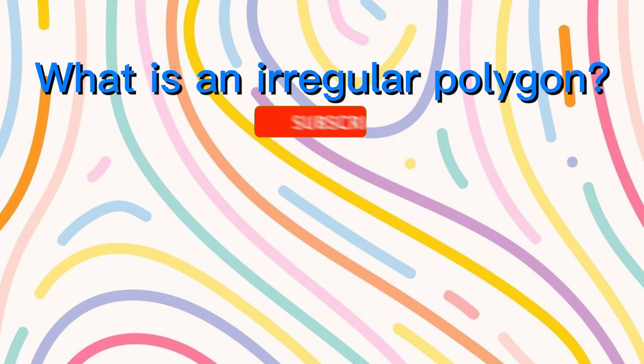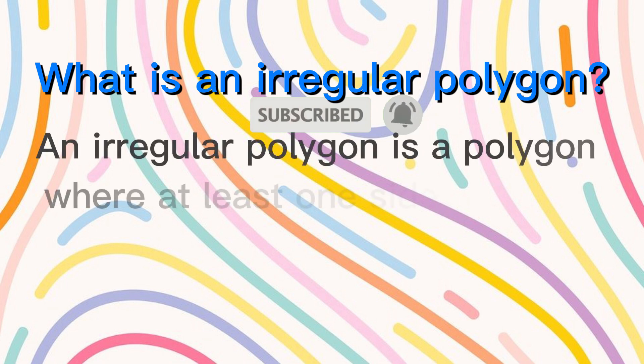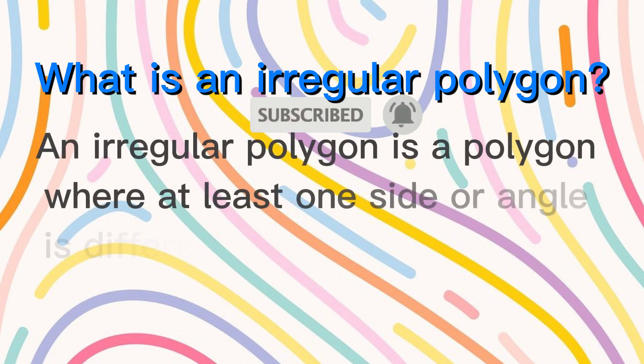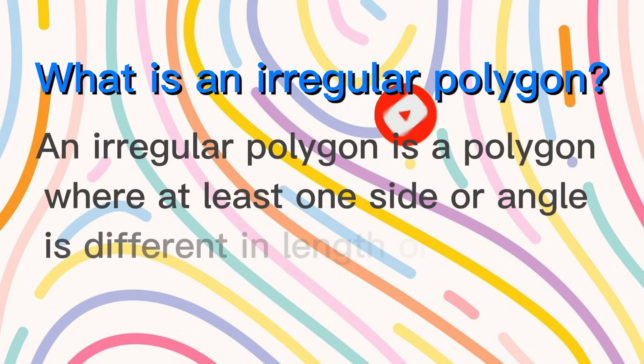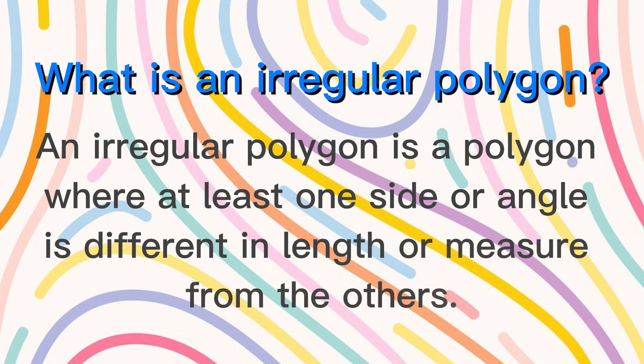What is an irregular polygon? An irregular polygon is a polygon where at least one side or angle is different in length or measure from the others.